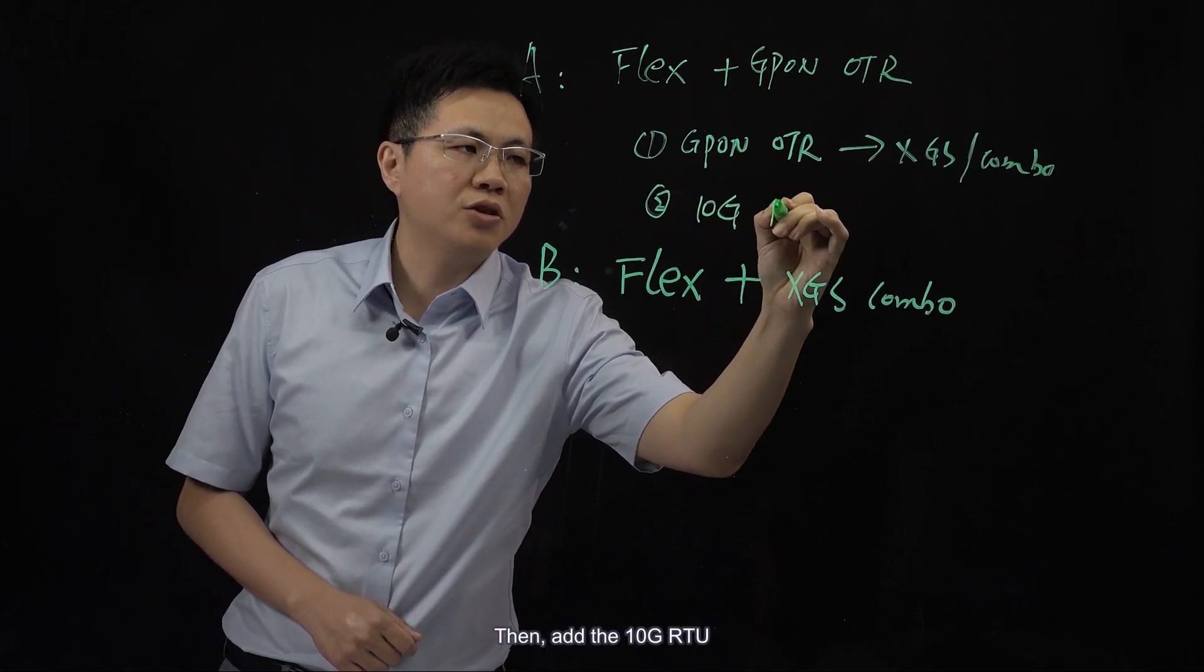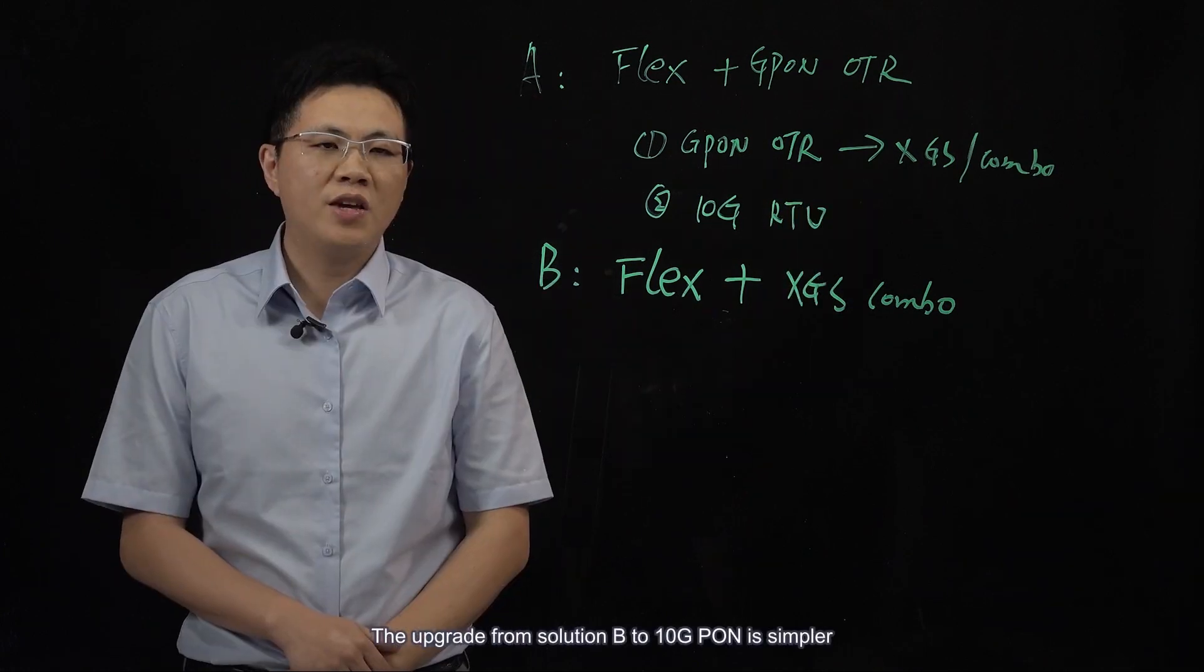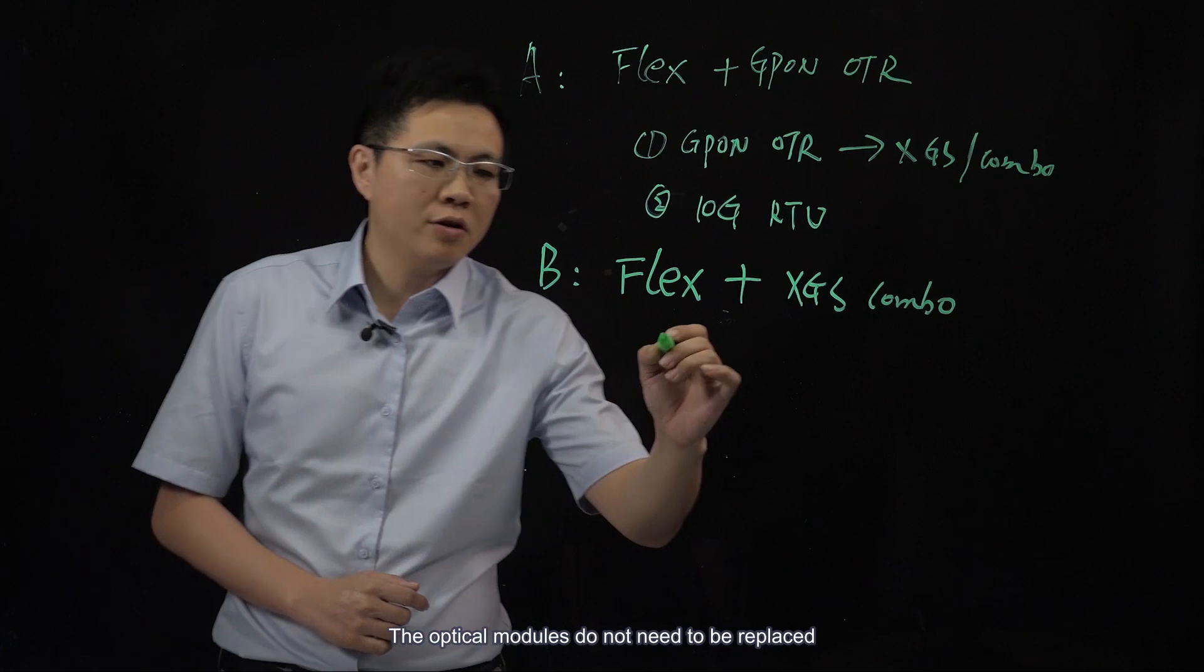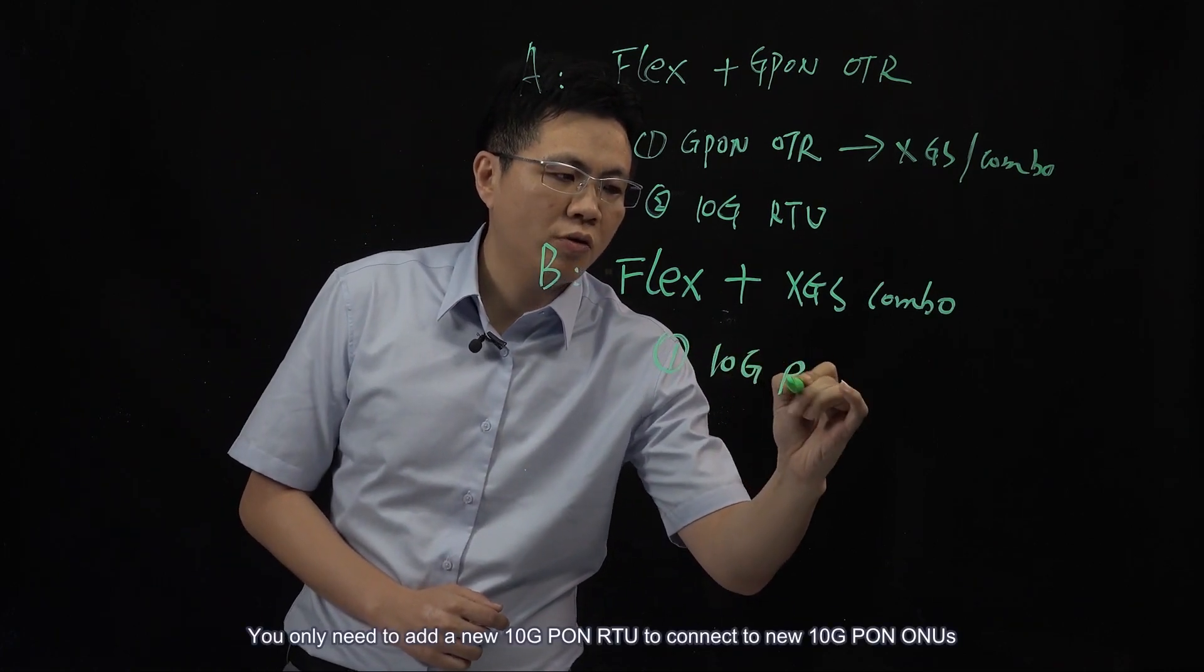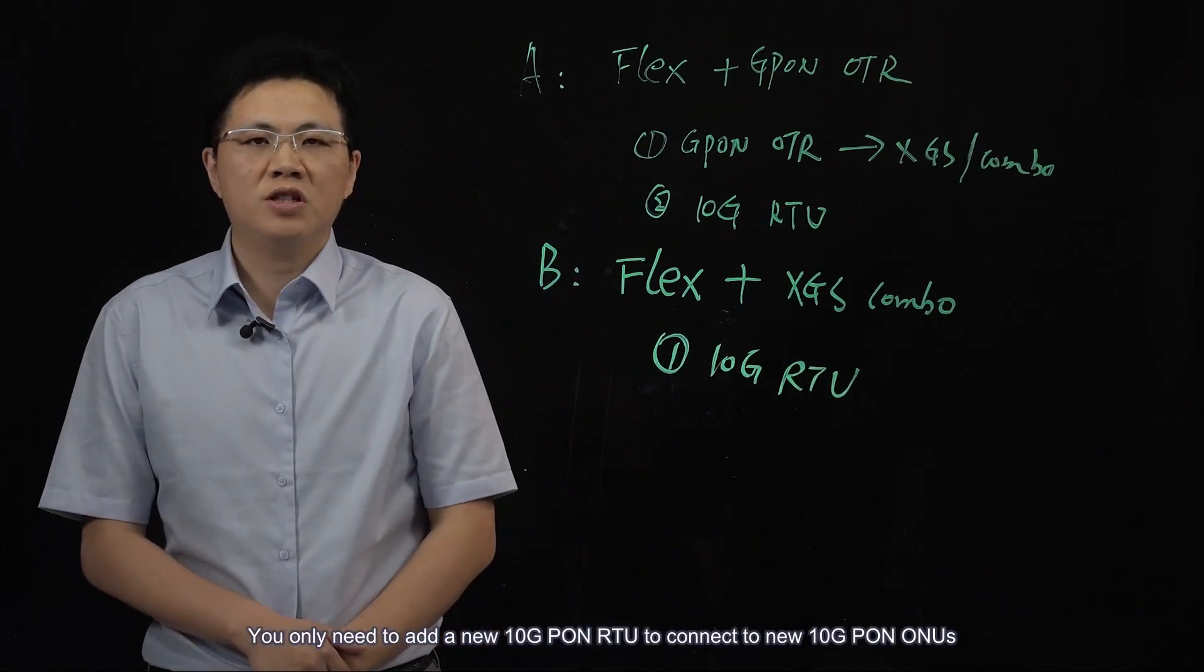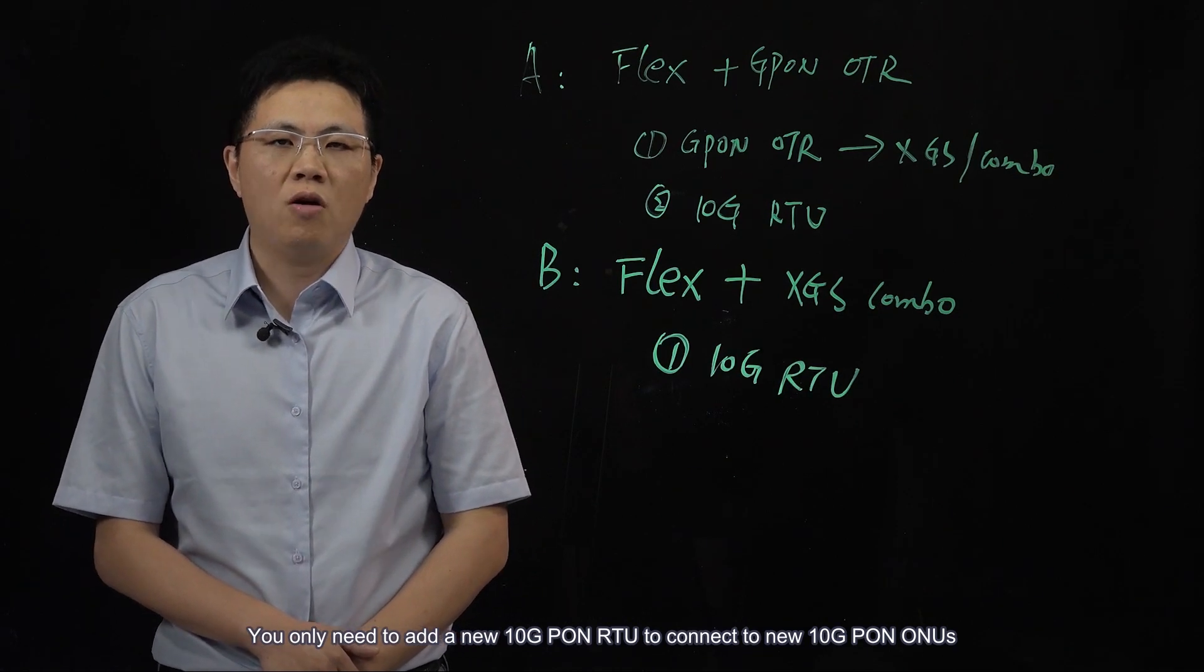Then, add the 10G RTU. The upgrade from solution B to 10G-Pon is simpler. The optical modules do not need to be replaced. You only need to add a new 10G-Pon RTU to connect to new 10G-Pon ONUs.